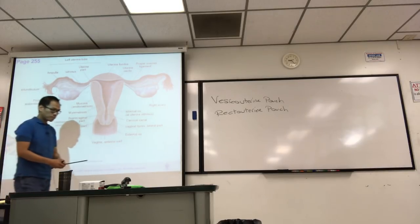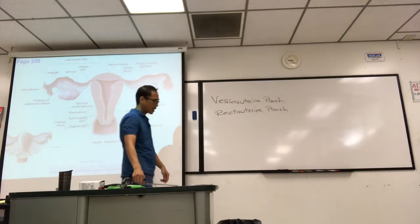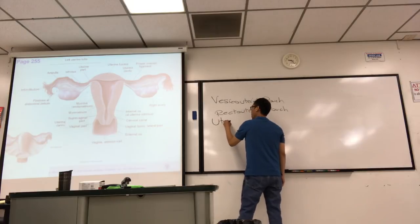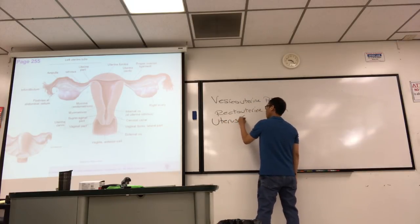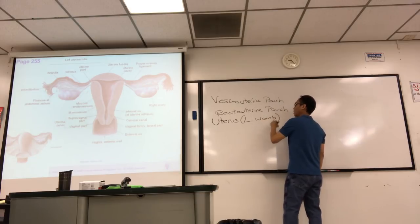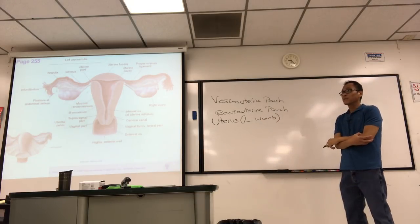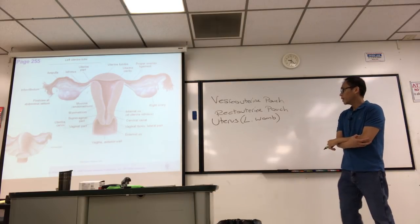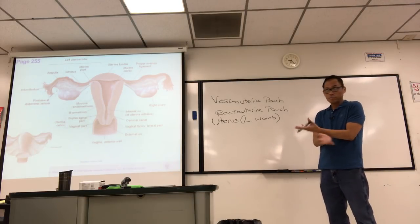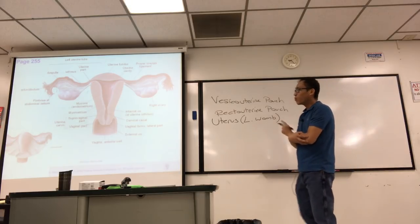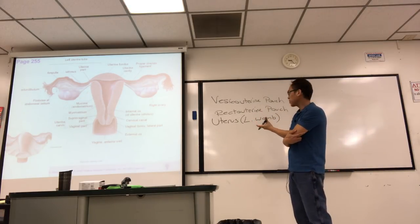The uterus is basically an upside-down pear shape. Uterus is a Latin word for womb. It's for pregnancy — 38 weeks of gestation. The cavity here receives a blastocyst for implantation. Let's just learn the anatomy, just the parts.